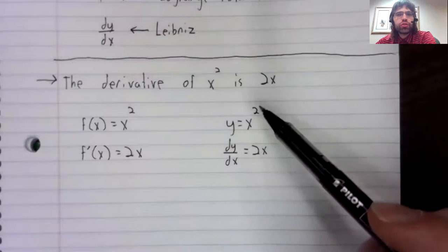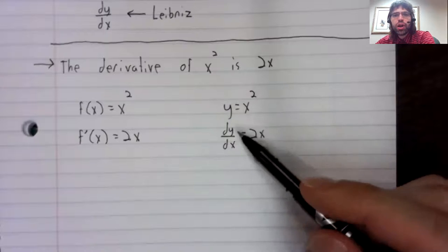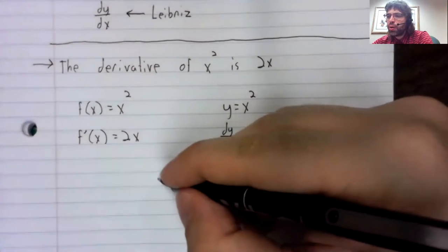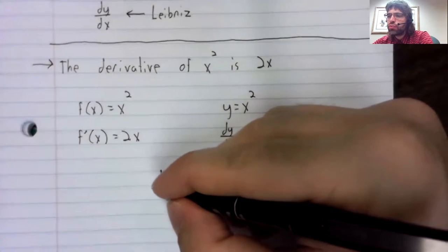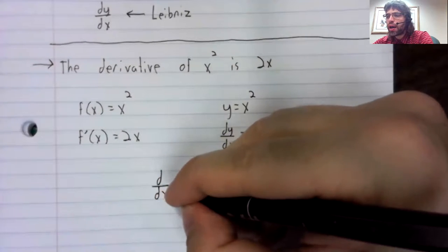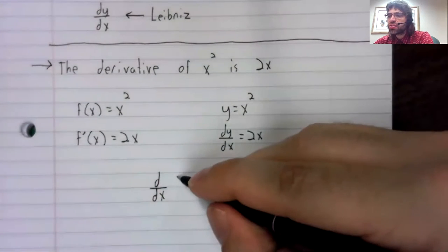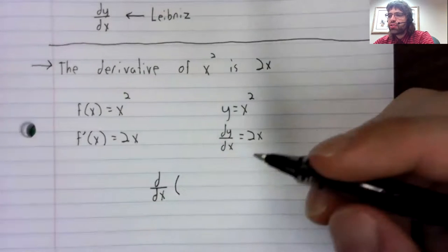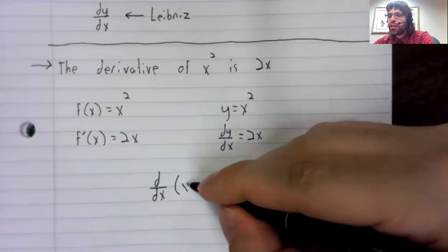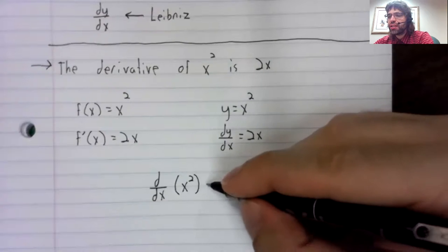We don't have to do that with Leibniz notation. I know I did up here, but what we can do is drop the y, write d dx, and in the place of y write the expression here.